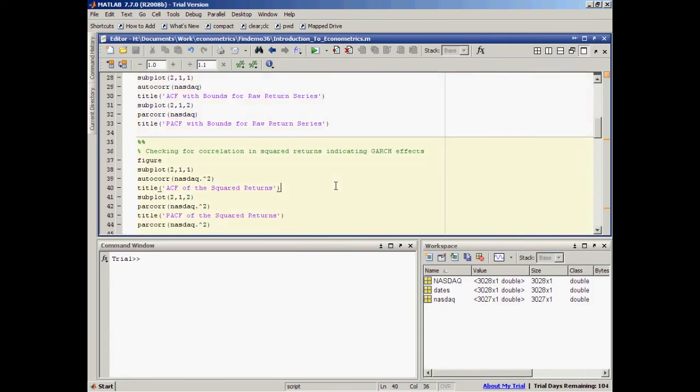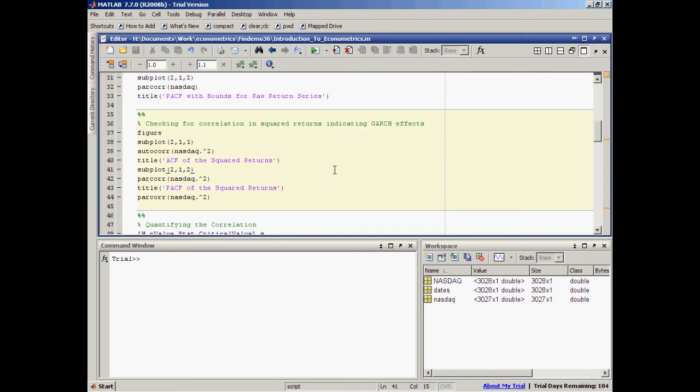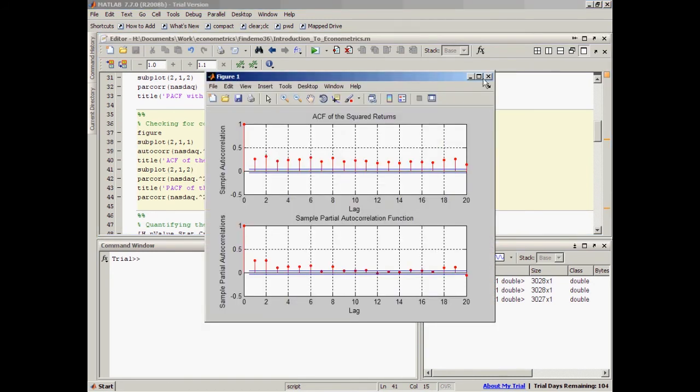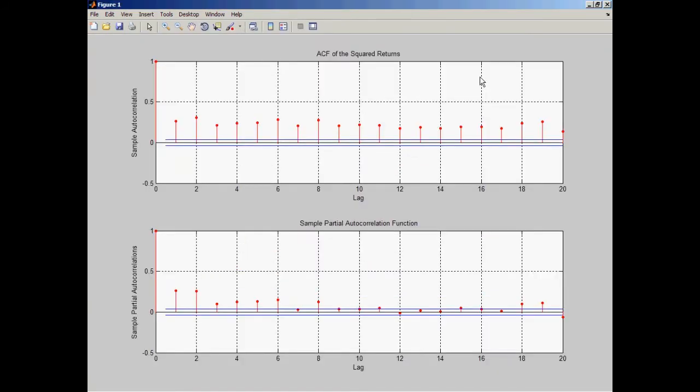Now I'm going to do the same for squared returns. This figure shows that although the returns themselves are largely uncorrelated, the variance process exhibits some correlation.